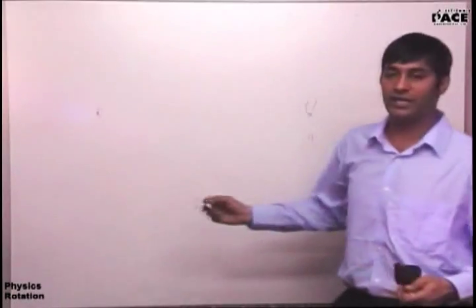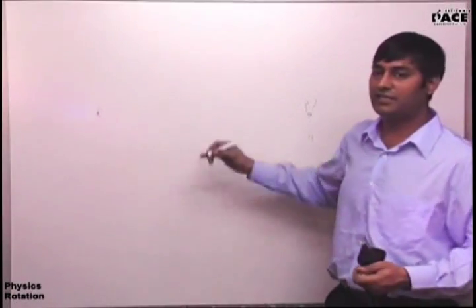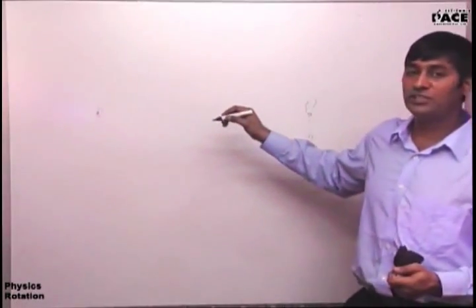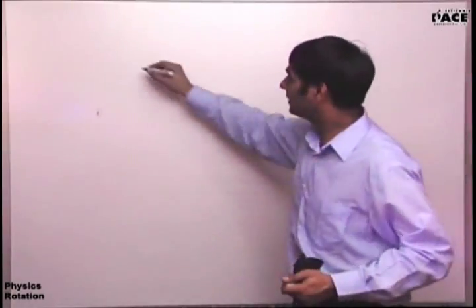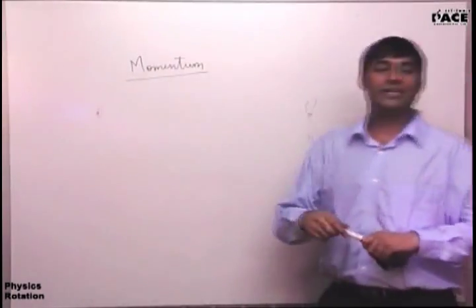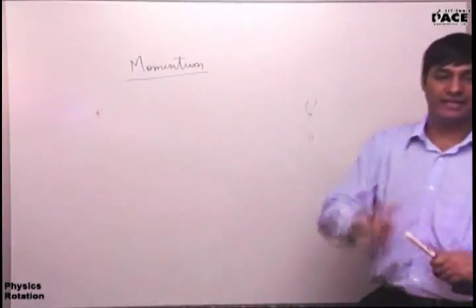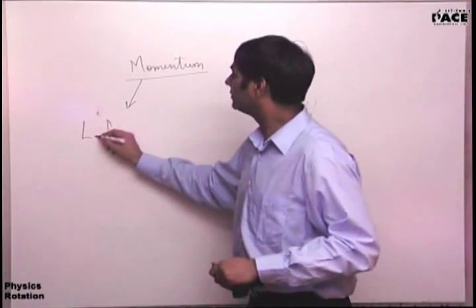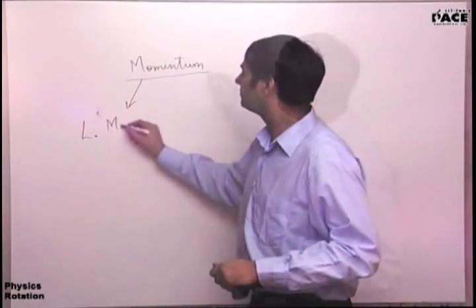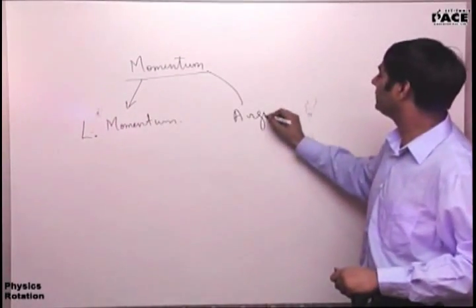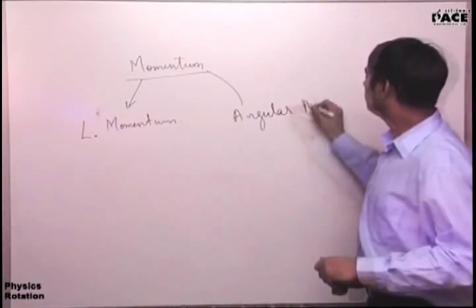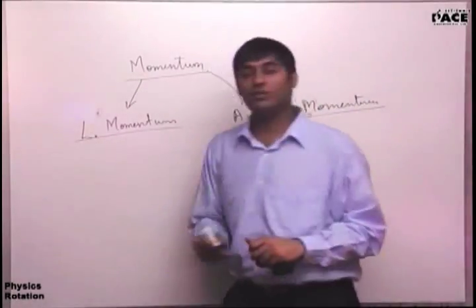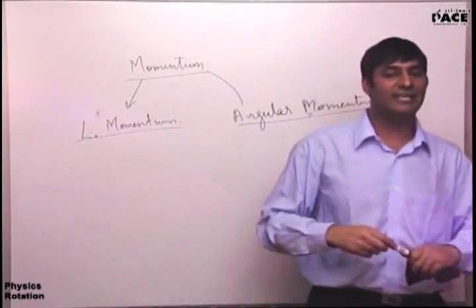Next is momentum. Momentum is two different types. One is linear momentum and the other is angular momentum. We'll take both of them together. You'll have to find them clearly and then you'll have to see.